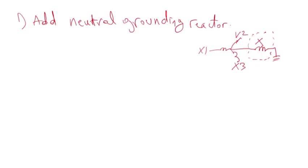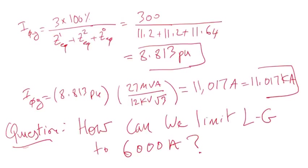Hello and welcome to Engineering Simple. In the previous video I calculated the line-to-ground fault on the low voltage side to be 11,000 amps. Then I asked the question: how can we limit this fault current to 6,000 amps? Because 11,000 is a lot — you might be able to buy a breaker that would interrupt this fault current, but it might be too big for the breaker, and there are other consequences.